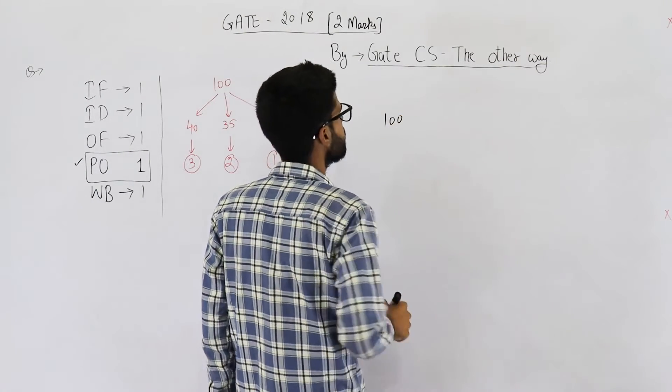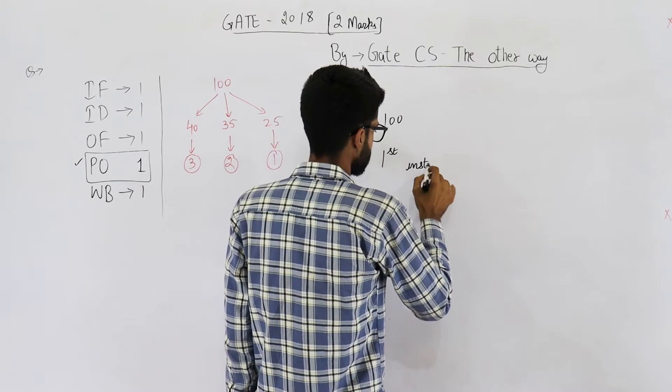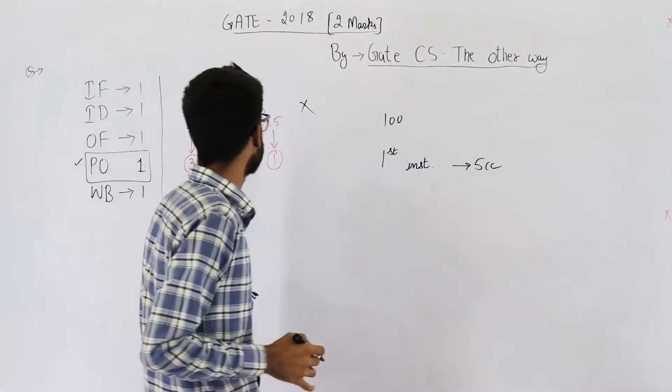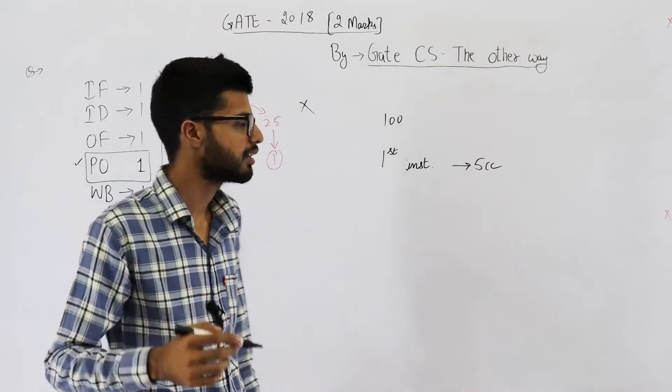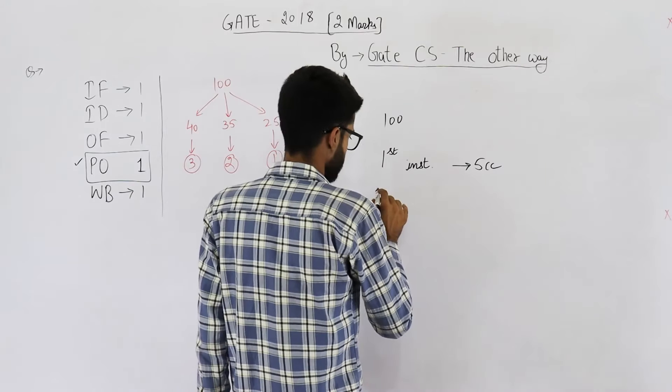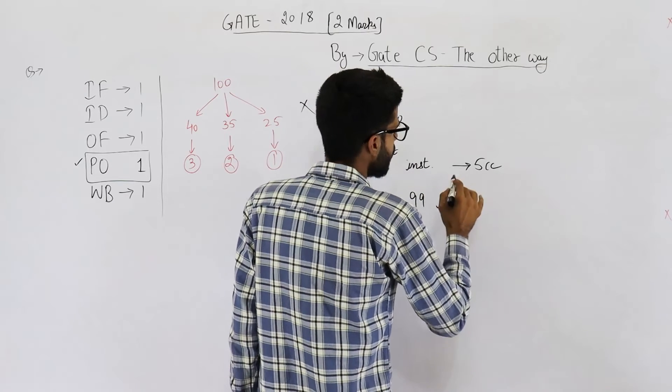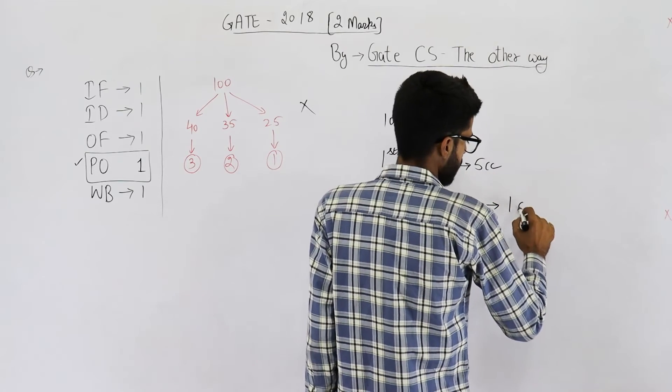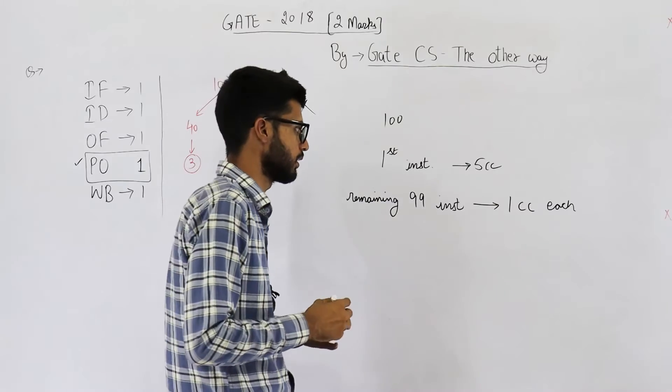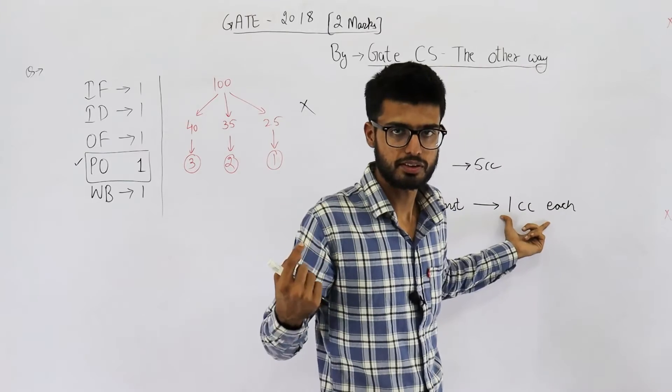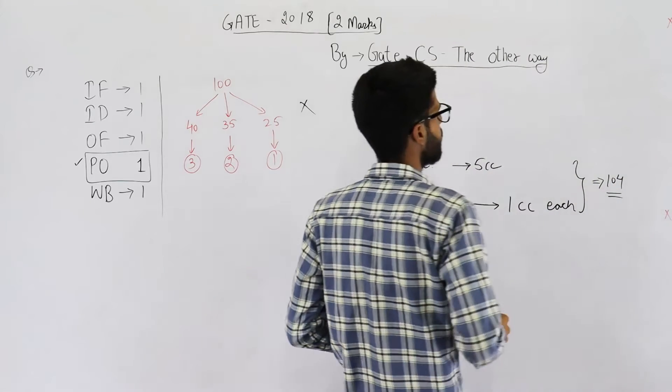We have 100 instructions in the program given. So first instruction is going to take 5 clock cycles. Why? Because initially the pipeline will be empty. So first instruction will go through all the stages and consume number of cycles equal to number of stages. But after that, every subsequent instruction, remaining 99 instructions, will consume 1 clock cycle each. After this first instruction is completed, every instruction will take only 1 clock cycle. So these are 5 clock cycles and these are 1 for each. That means these are 99 clock cycles. So in total you can see that 104 clock cycles are used.